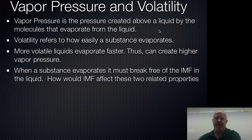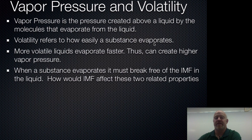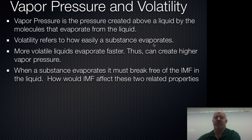Usually we think of volatile as meaning very physical or violent — a volatile movie or a volatile person — but in the chemistry and physics world, volatility really refers to how easily something evaporates. Things that evaporate really easily tend to have low flashpoints, so they can form gas easily and explode easier. That's why you get that mix of connotations between explosive and what it really means, which is just evaporation.